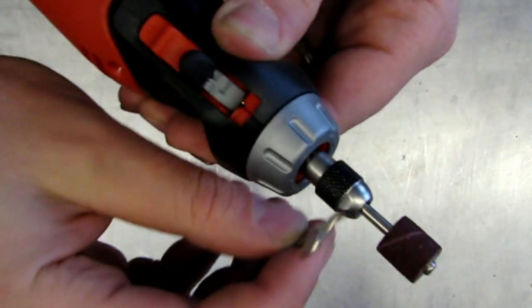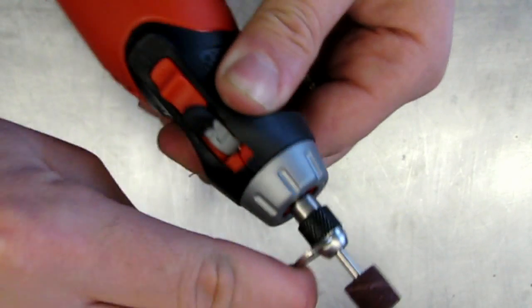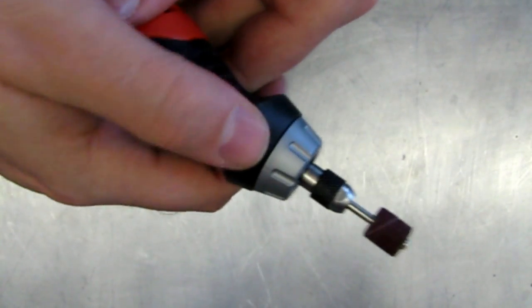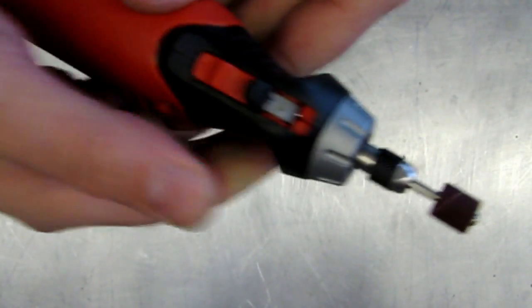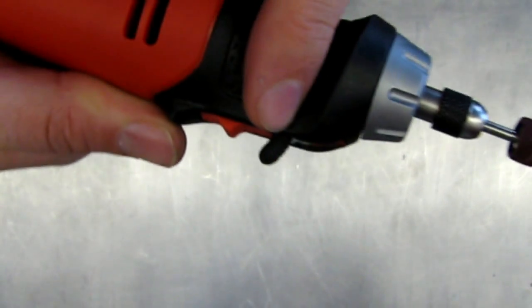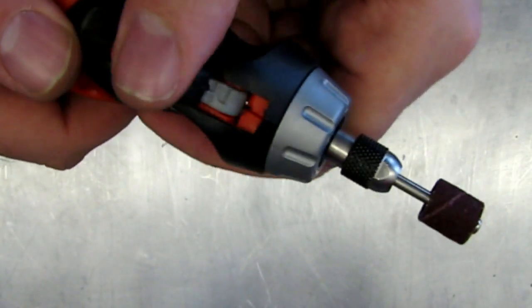Now, Dremel and Craftsman have a button that you push that locks the shaft in place. This is slick because it actually holds it in place and you don't have to bother with it. Then put it down when you're ready to go.